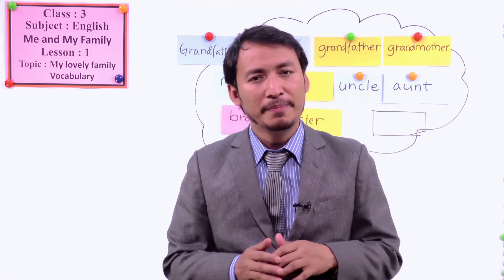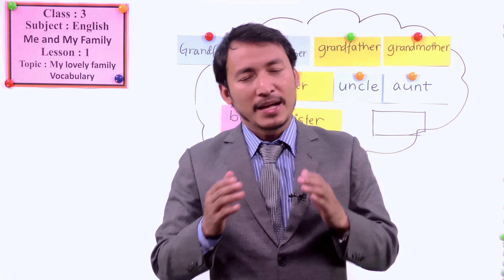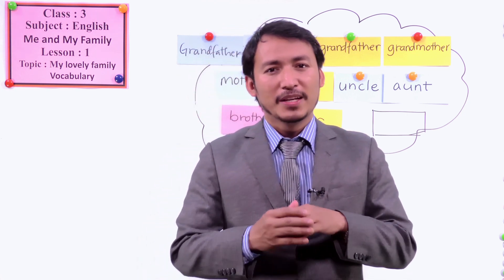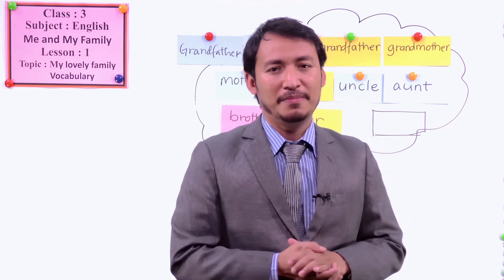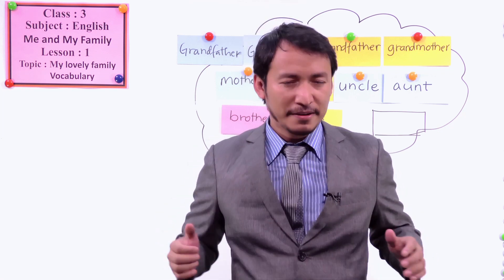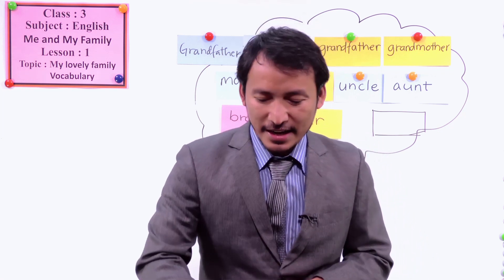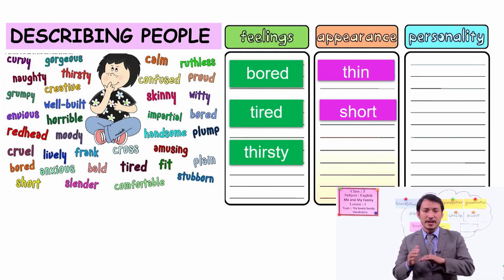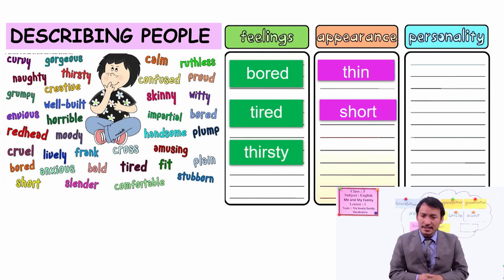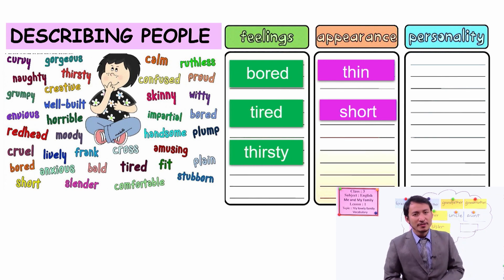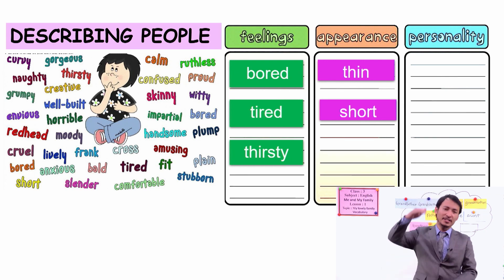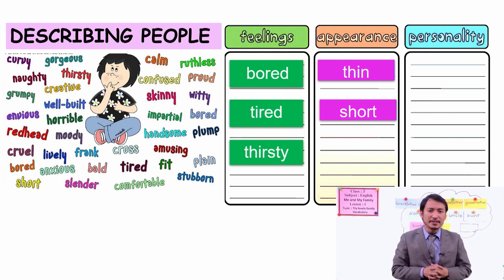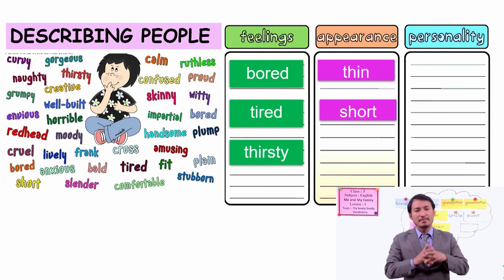Thin means not having a very big body. Another physical appearance describing word is short. Short means not very tall — having not much height. When someone has less height, we can say short person.